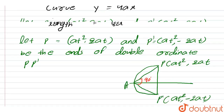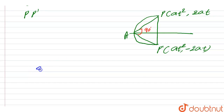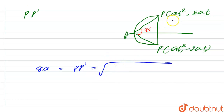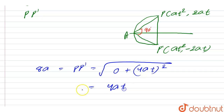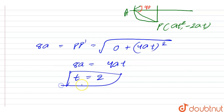The length PP' is given as 8a. So: 8a = PP' = √[(at² − at²)² + (2at − (−2at))²] = √[(4at)²] = 4at. Therefore, 8a = 4at, which gives t = 2.